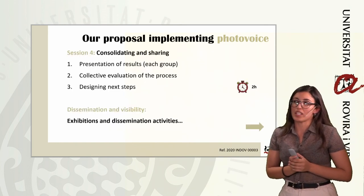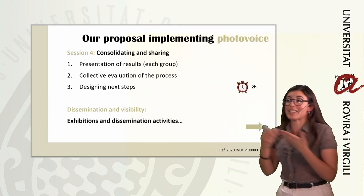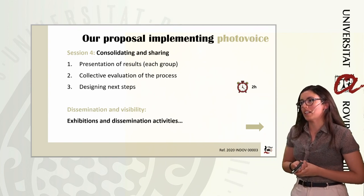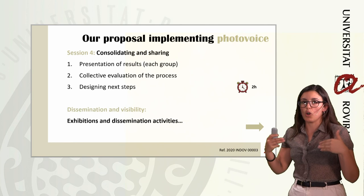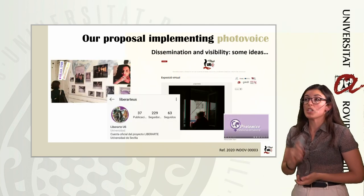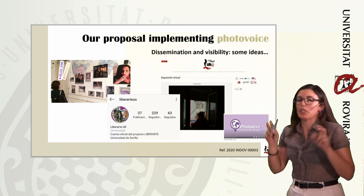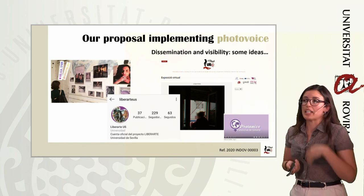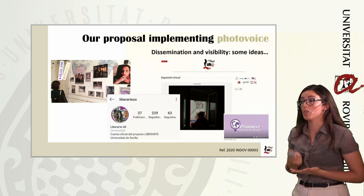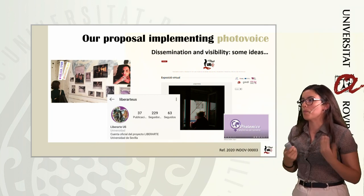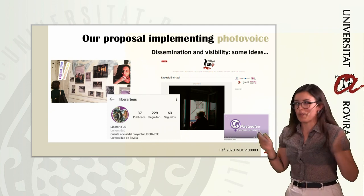After that, we go to session four, the last session, which consists of evaluating the process and designing next steps for the dissemination and visibility of the reflections built during the process — going beyond the classroom walls. Some ideas for political outreach beyond the classroom include physical exhibitions, an Instagram account, virtual exhibitions, and videos for dissemination activities. This part is open to creativity.